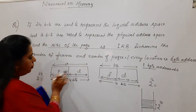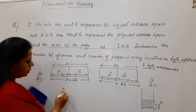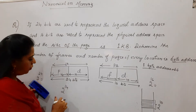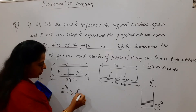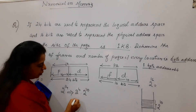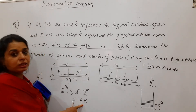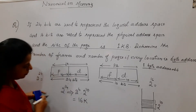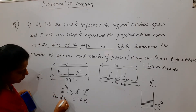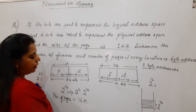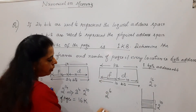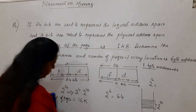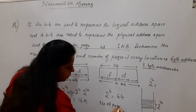Now you can easily find out the number of frames and number of pages. 14 bits give 2 to the power of 14, which is the number of pages. Writing this as 2 to the power of 4 times 2 to the power of 10, that is 16 K — so the number of pages is 16 K. For frames, 6 bits give 2 to the power of 6, which is 64. Therefore, the number of frames in physical memory is 64.